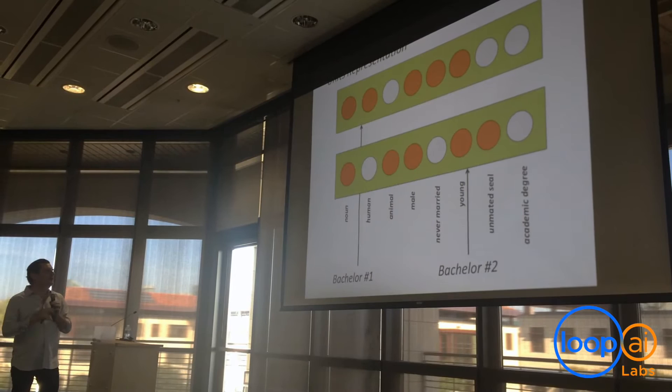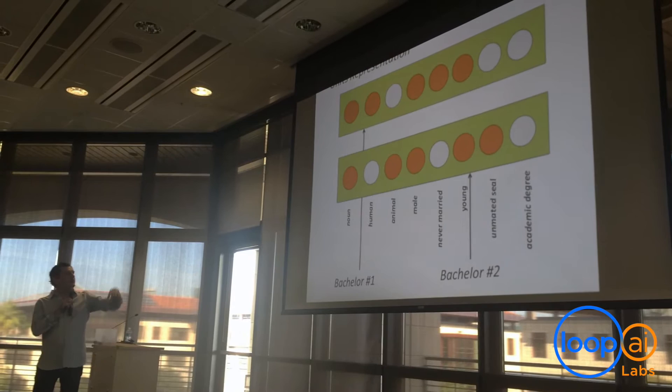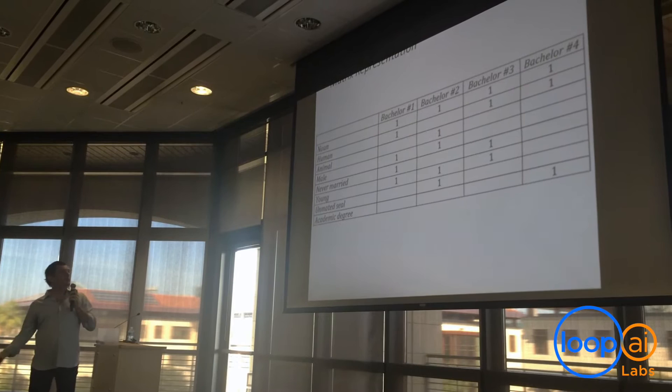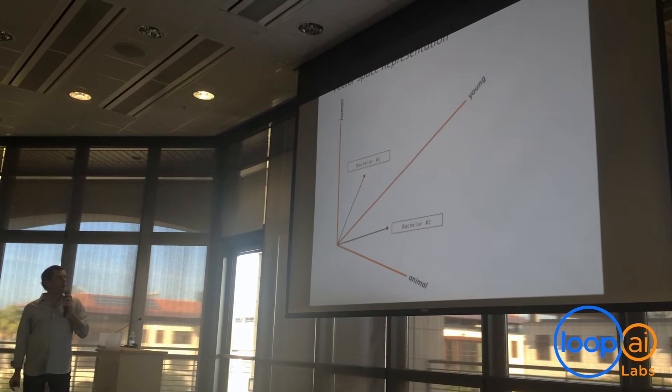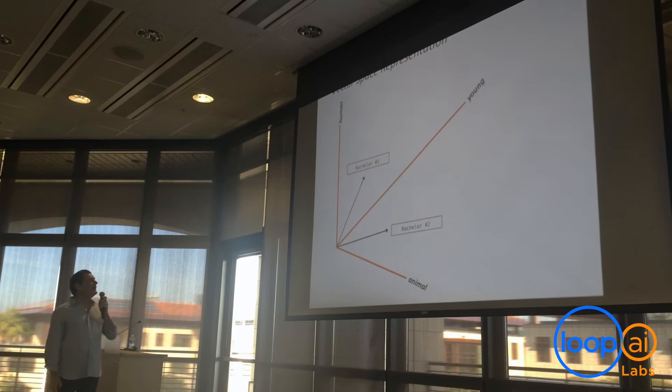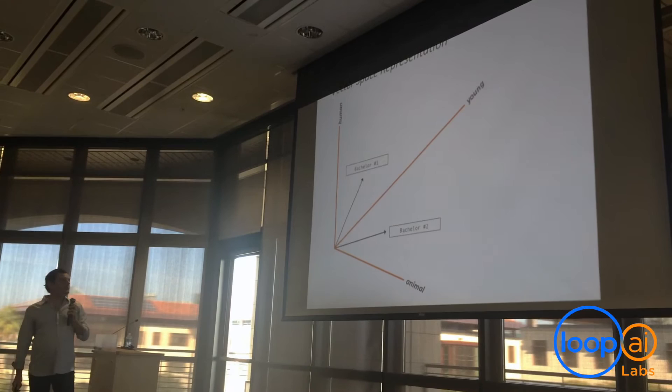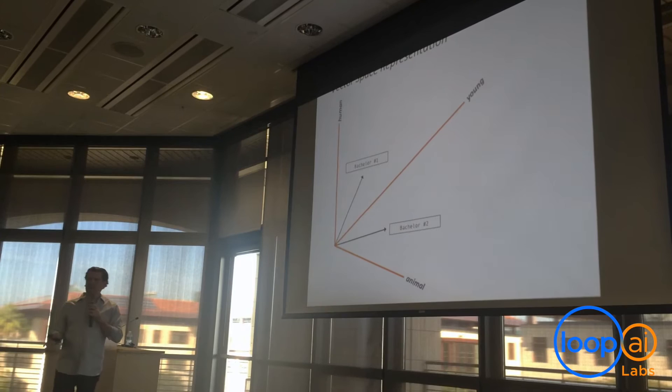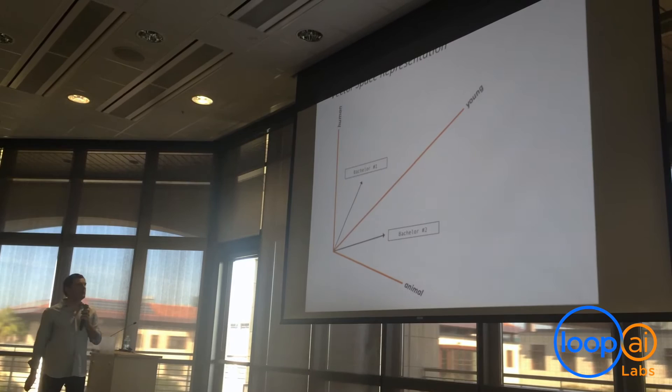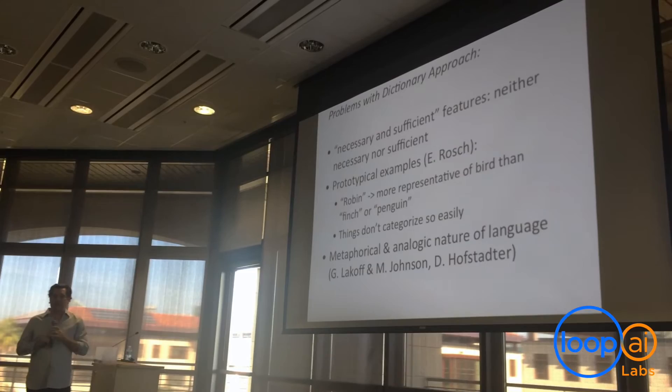Another thing you might do is use what we call a units representation, where you take the necessary and sufficient features and define the unit for each one. You could also look at it as a matrix or table like this, or you could take all those features and make them basis vectors into some low-dimensional space and make a vector space representation, then plot all your different words in that vector space. These three things are just three different transformations of essentially the same thing, but they are three ways you'll hear people in deep learning and semantics talking about these ideas.